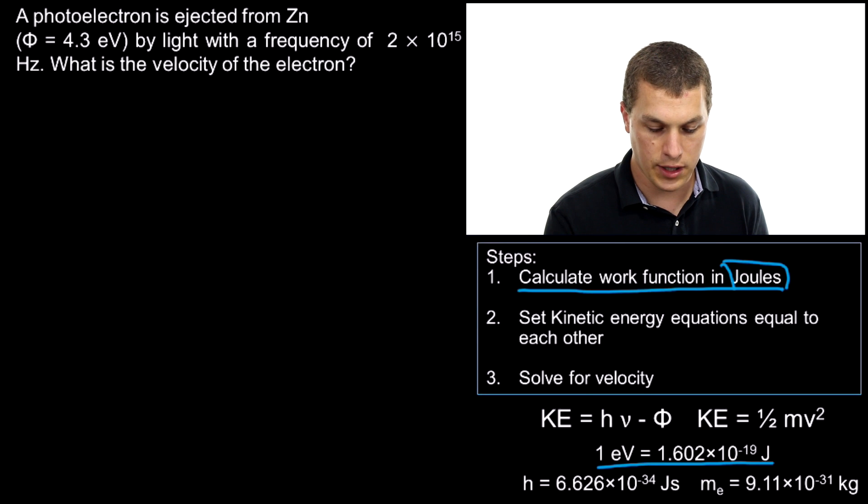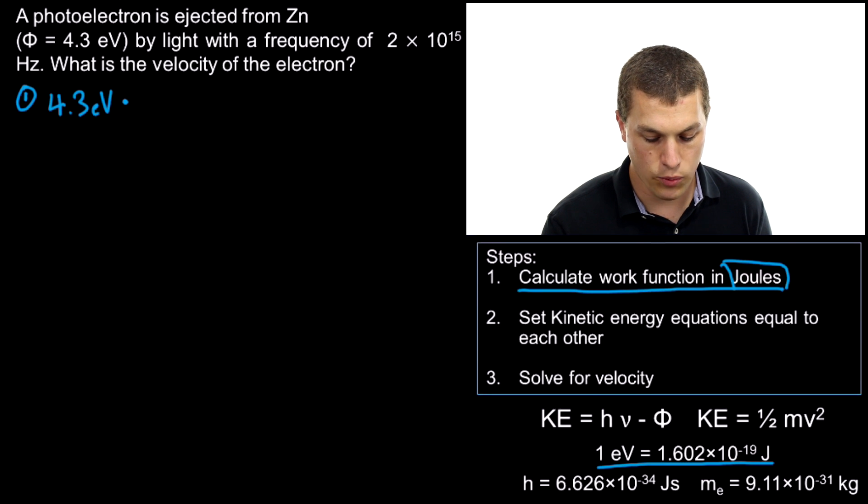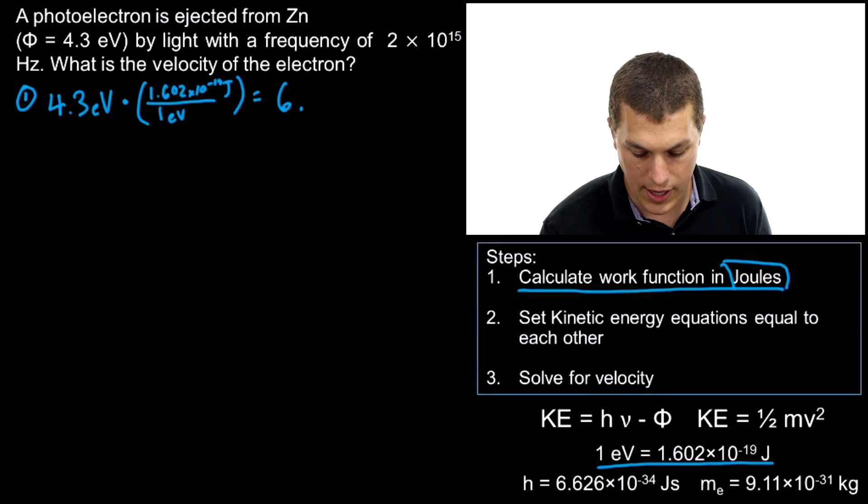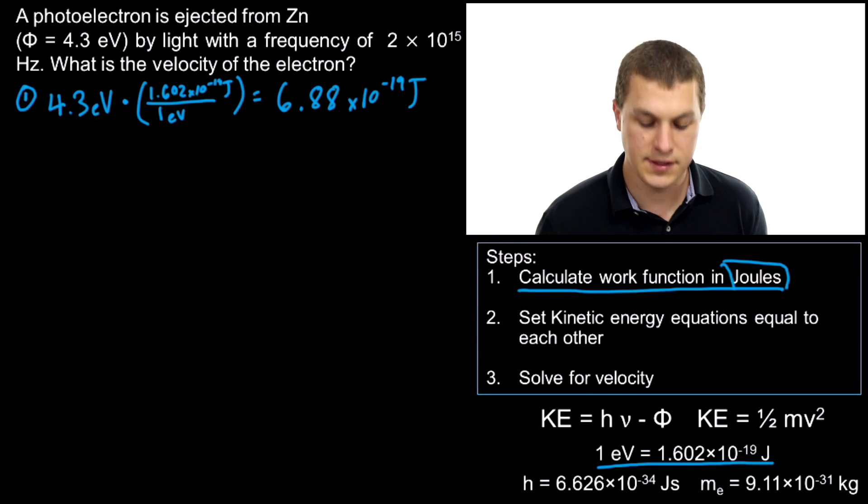So step one, we're going to convert our binding energy from 4.3 eV. We're going to cancel out that eV by writing 1 eV on the bottom and multiply by 1.602×10⁻¹⁹. When we do that, we get 6.88×10⁻¹⁹ joules. Now, there are more decimal places than that that my calculator spits out. Keep all of those in your calculator and use them in the next step of the calculation.